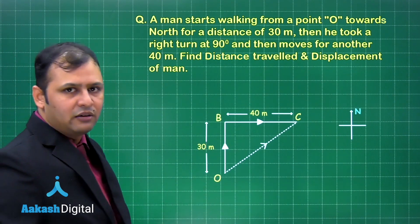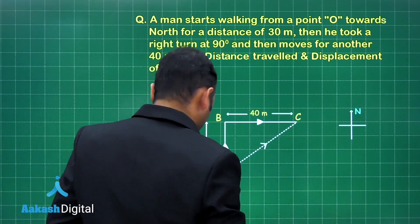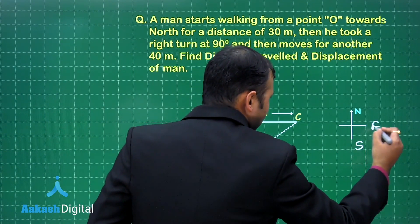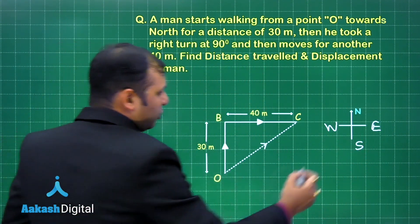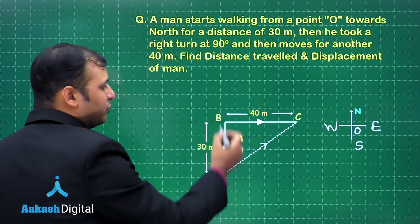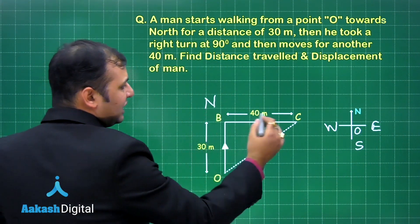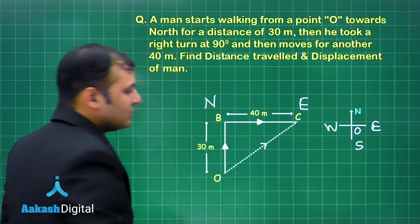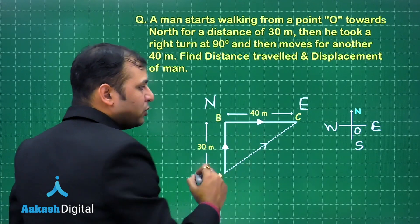Here you can see a diagram where this direction represents north, this is south, this is east, and this is west. The object starts from point O, moves up towards north, then takes a right turn moving towards east.